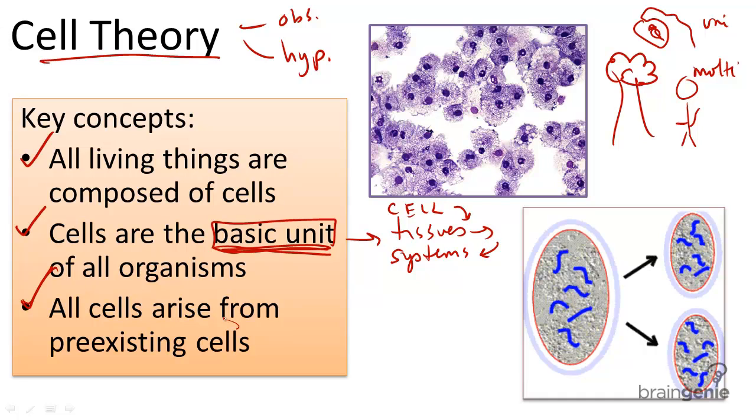Last, all cells arise from pre-existing cells. This means, in essence, we can watch cells grow from other cells. We can see this through the use of light microscopes.